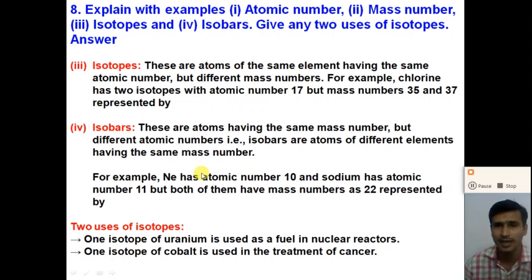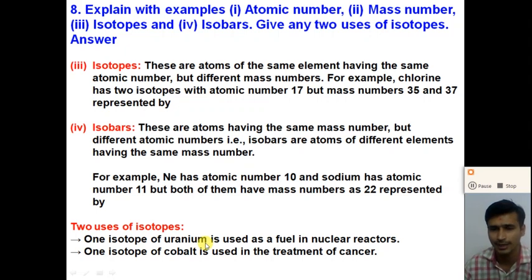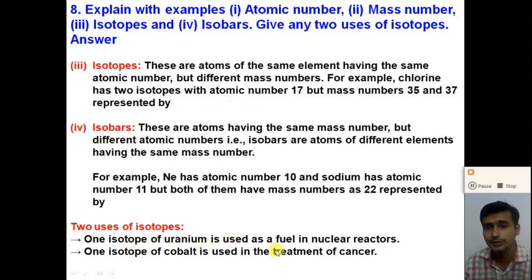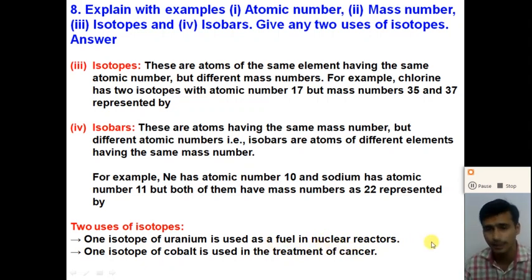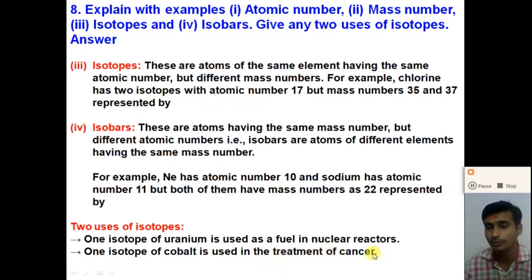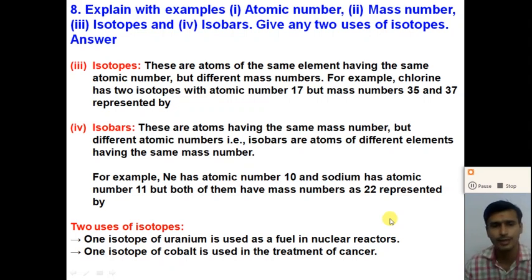Give any two uses of isotopes. First, one isotope of uranium (atomic number 92, mass 235) is used as fuel in nuclear reactors and nuclear power plants. Second, one isotope of cobalt is used in the treatment of cancer. There are many uses of isotopes of different elements in our daily life.